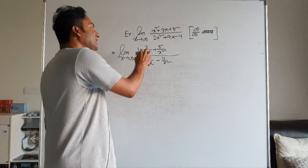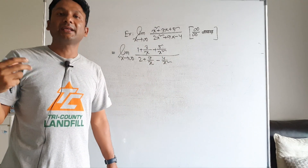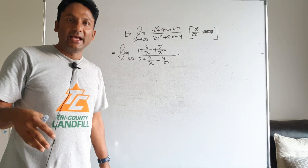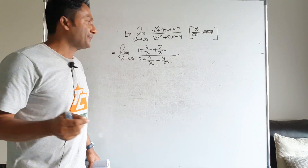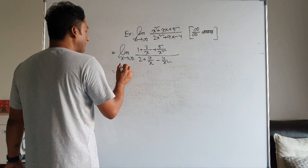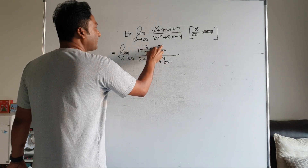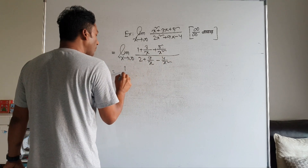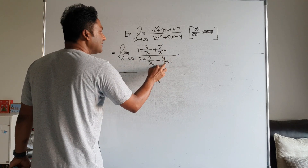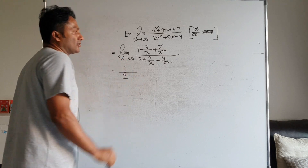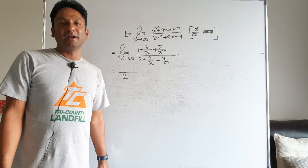If something is divided by x and x tends to infinity, it equals zero. Applying the limit: 3 by infinity is 0, 5 by infinity is 0, 9 by infinity is 0, 4 by infinity is 0. So the answer is 1 divided by 2. In this way, you can find the limiting value.